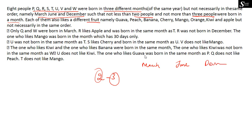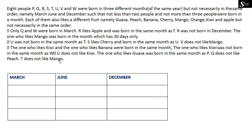We need to find which of the eight persons were born in each of these three months. The constraint is that not less than two and not more than three people are born in any single month. Because there are eight persons total, one month will have two people and the remaining two months will have three people each.